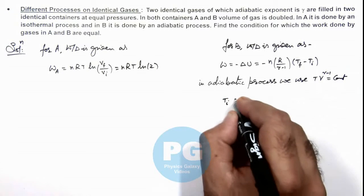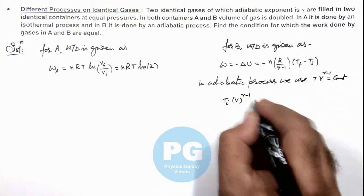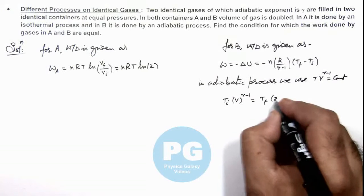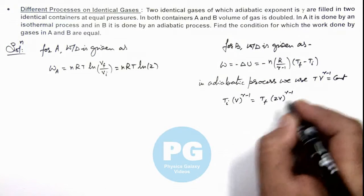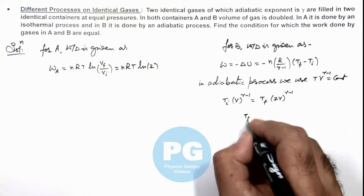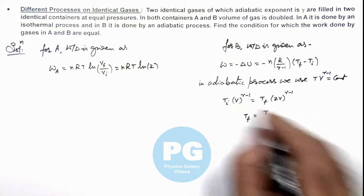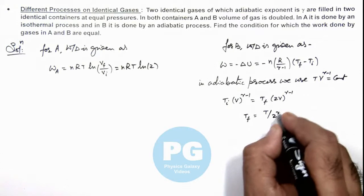...as the volume is doubled it is 2V to power gamma minus 1. This results in T_final equal to initial temperature, if it was T, this is T / 2^(gamma-1).